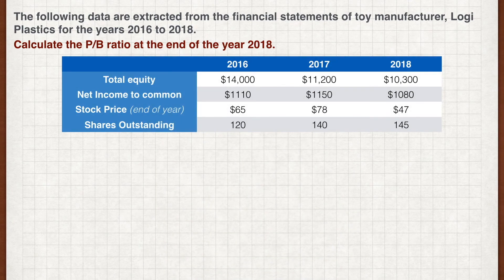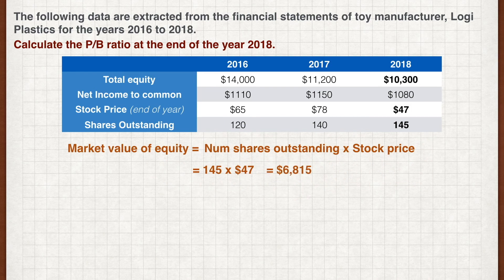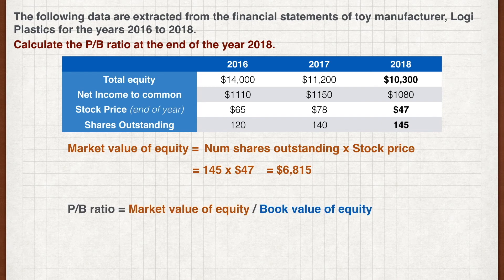Our first step is to calculate the market value of equity, which is the number of shares outstanding multiplied by the ending stock price for 2018. Plugging in the figures, we get a market value of $6,815. The PB ratio is simply the market value divided by the book value of equity, which is $10,300 at the end of 2018. This gives us a PB ratio of 0.66.